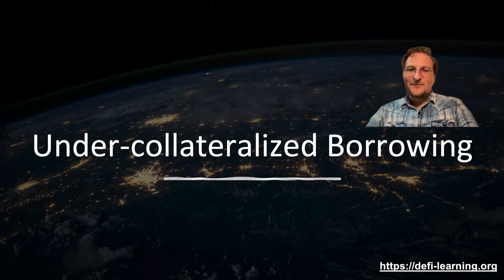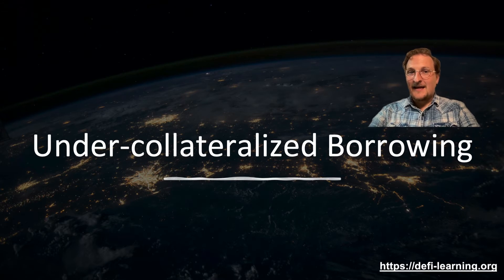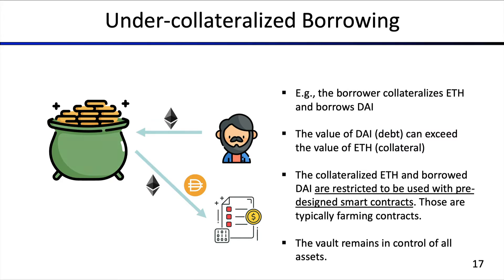Welcome back! We're going to dive into under-collateralized lending — lending that enables you to leverage beyond 2x. Similar to over-collateralized lending, here we have a borrower who can collateralize ether and borrow DAI, and again we have a vault where the borrower deposits his assets. The difference now is that the value of DAI, which is the debt, can exceed the value of the ether, which is the collateral.